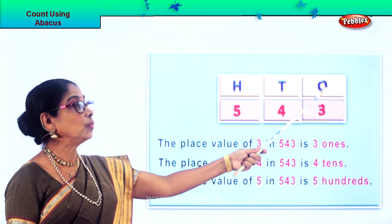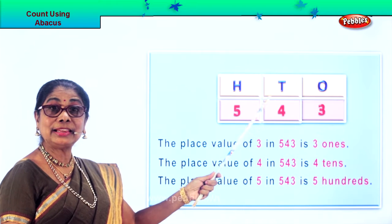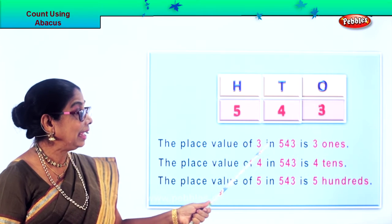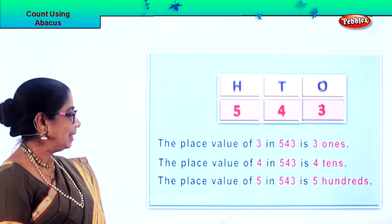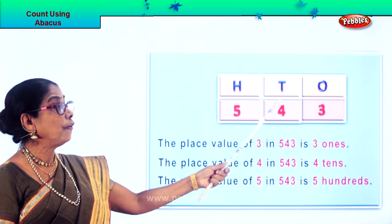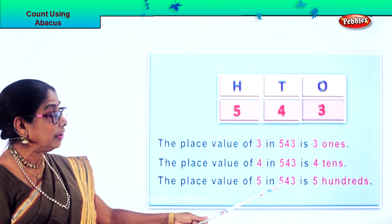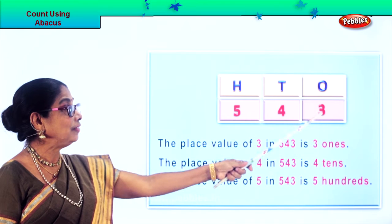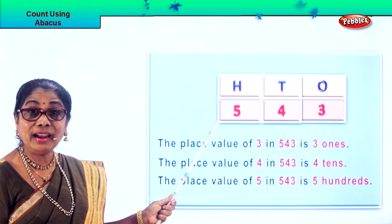Look at this. Read: ones, tens, hundreds. What number do we have here? Three ones, four tens, five hundreds. The place value of three in five hundred and forty-three is three ones. The place value of four in five hundred and forty-three is four tens. Five hundreds. So you have three ones, four tens, and five hundreds in five hundred and forty-three.